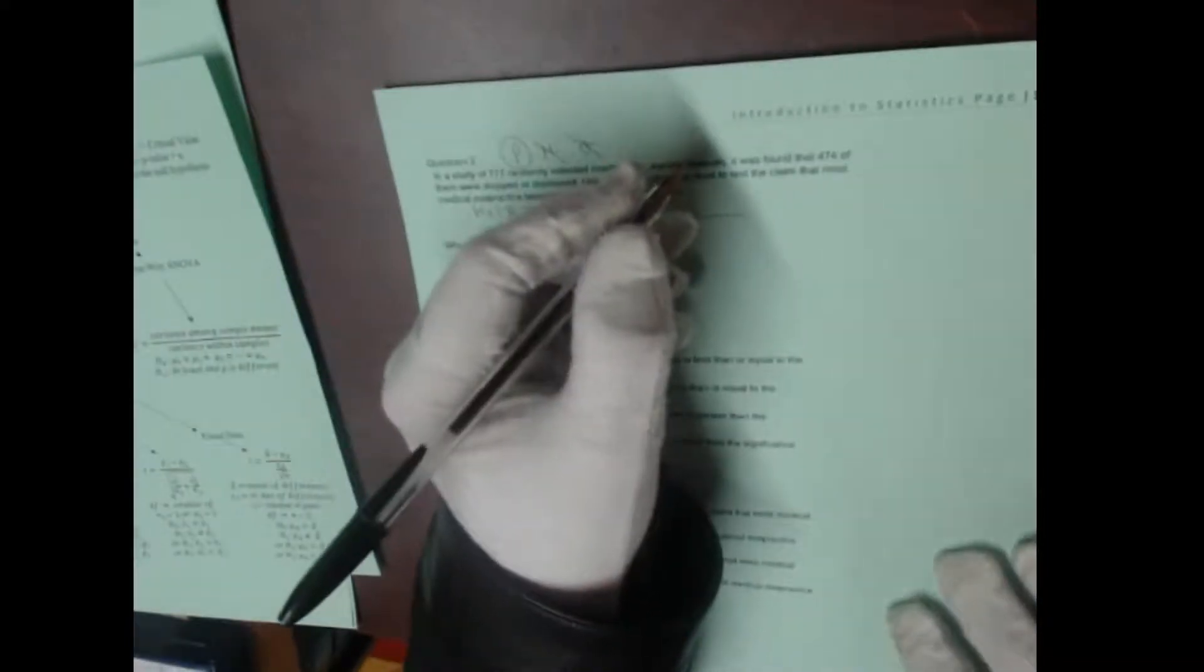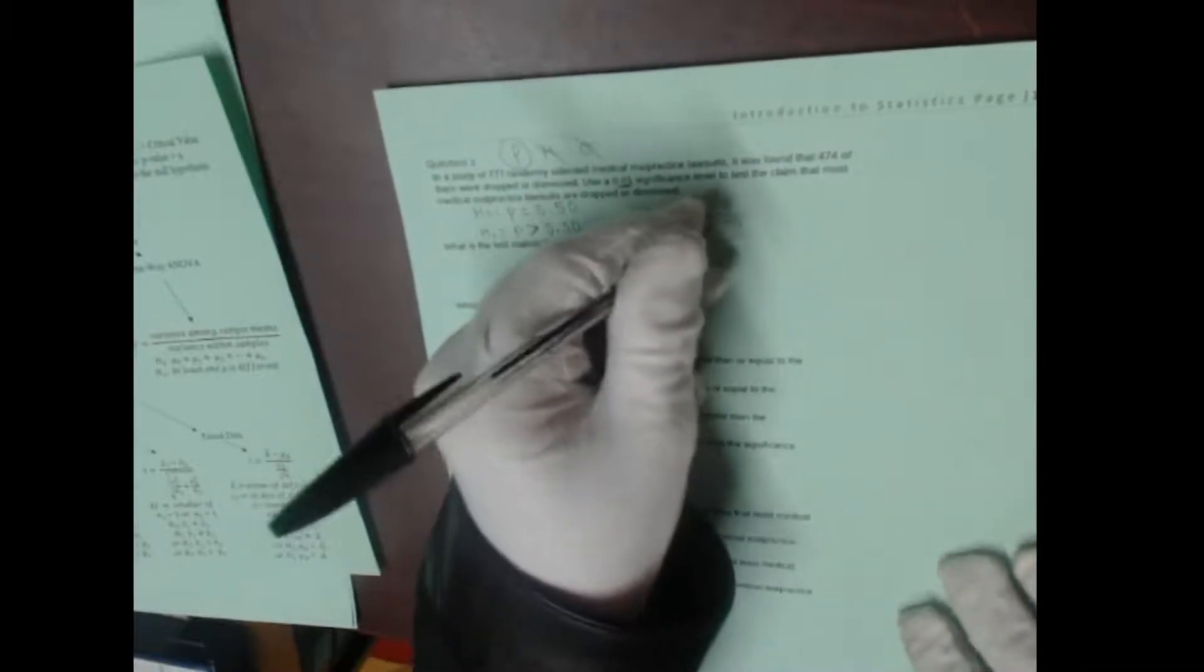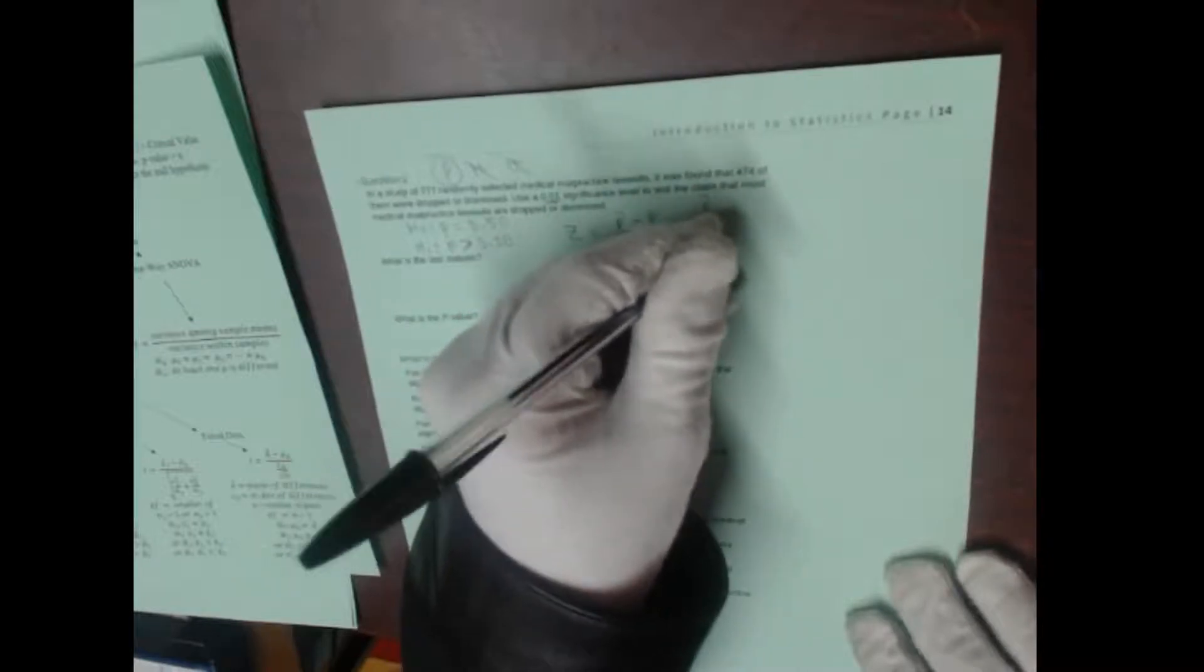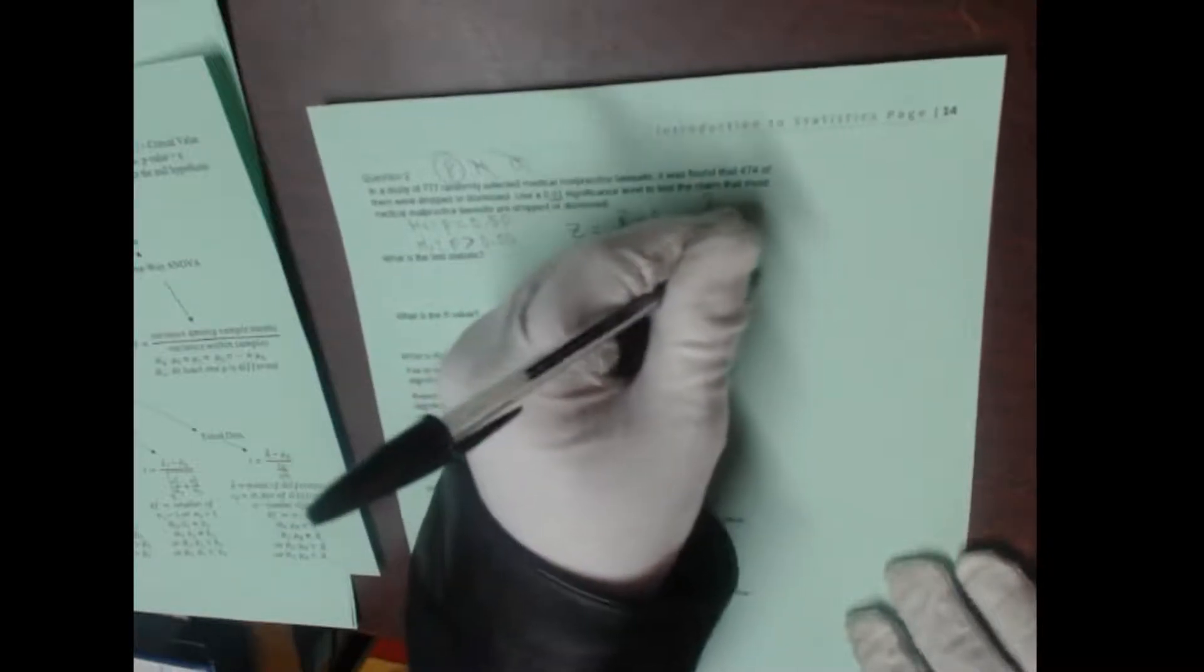It's z is equal to p-hat minus p divided by the square root of pq over n. So we need p-hat, p, q, and n. Notice I always like to write down all of the values before we do the formula, before we do the test. So here we go.